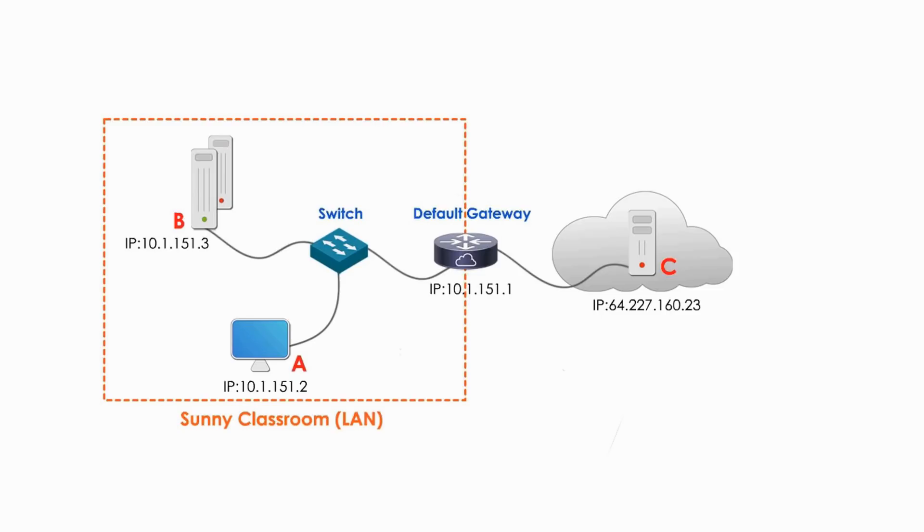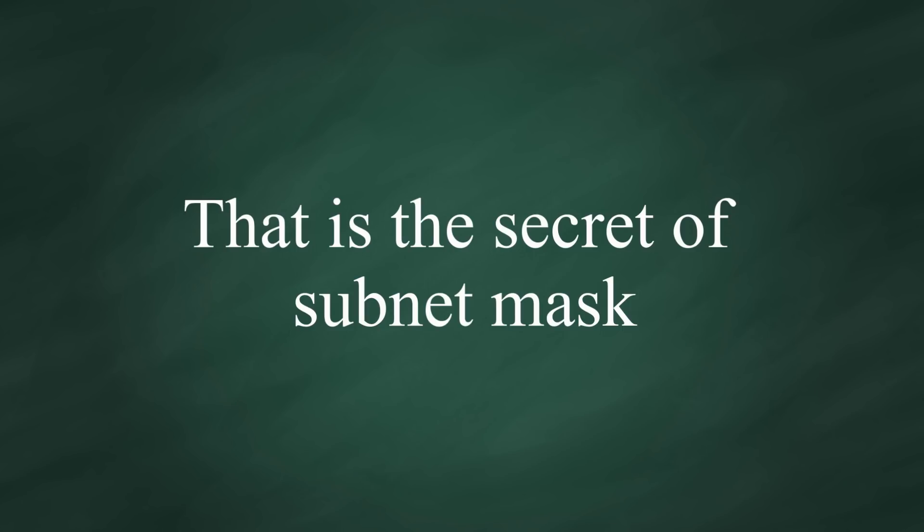Look at this picture. On a local area network, sunny classroom, computer A wants to talk to computer B, which is also on the same local area network. Meanwhile, computer A also wants to talk to computer C somewhere over the rainbow on the internet. But how does computer A know that computer B is local and computer C is remote? Well, that's the secret of subnet mask.